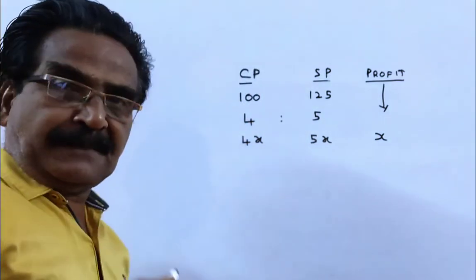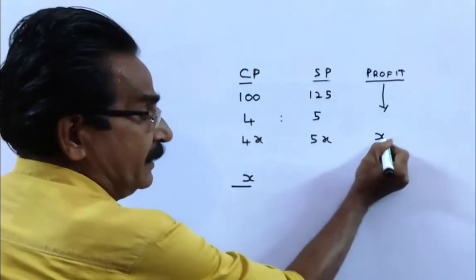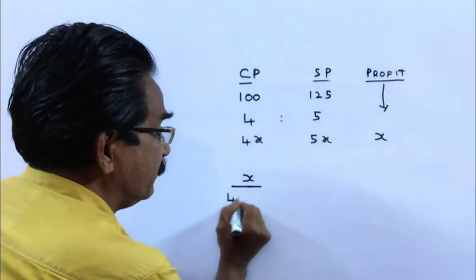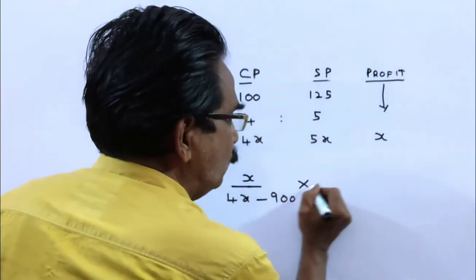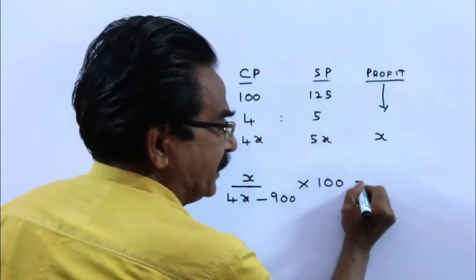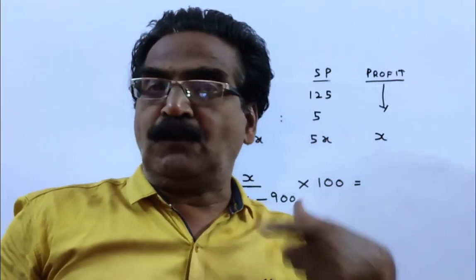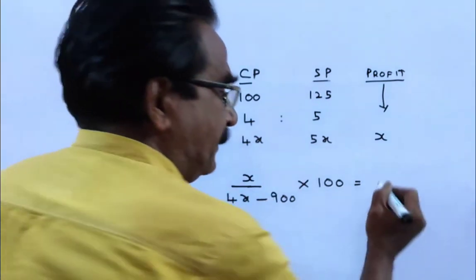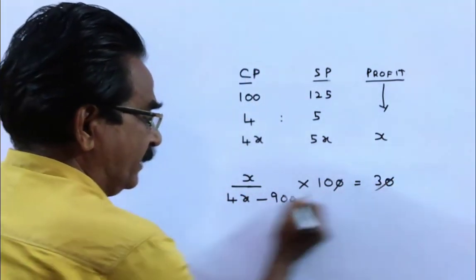So now let us see what is the profit percentage. Profit x divided by cost price 4x minus 900 into 100. By doing this we get profit percentage. The profit percentage is 5% more than the earlier profit. That means now the profit percentage is 30%. So 30, zeros cancel, giving us the equation.